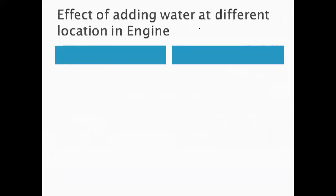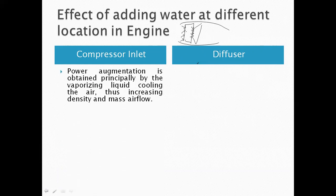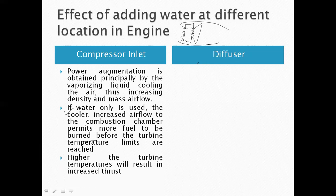Water can be added at two different places: one is the compressor inlet and another is the diffuser inlet. Either location can be used and both have their own advantages. When water is added at the compressor inlet, power augmentation is achieved because the water vaporizes there, decreasing temperature, allowing more fuel to be added and thereby producing more thrust. If water is added at the diffuser inlet, the mass of airflow increases, and this increased mass is applicable throughout both compressor and turbine sections, again allowing more fuel to be added in the combustion chamber for more thrust.